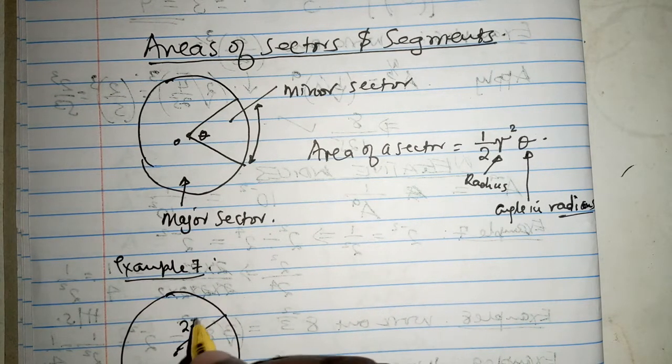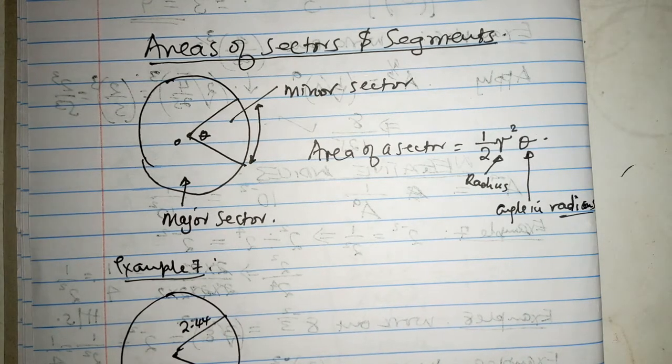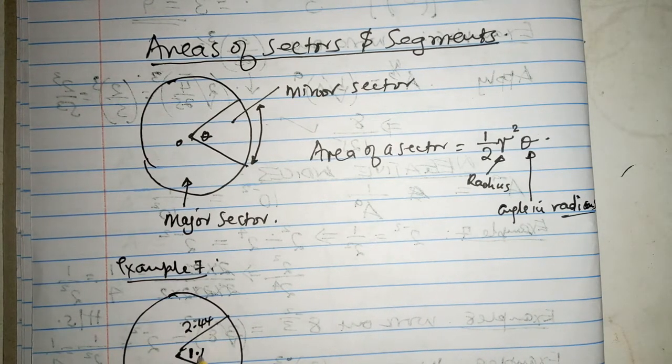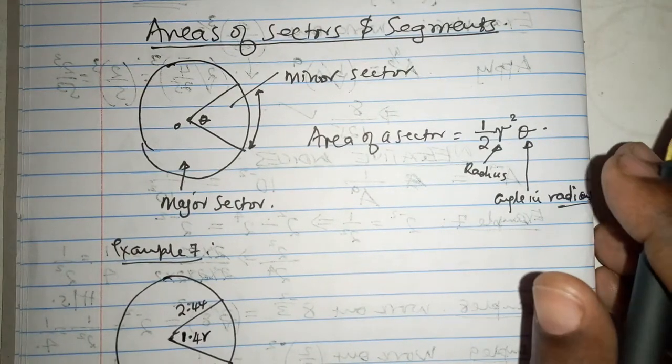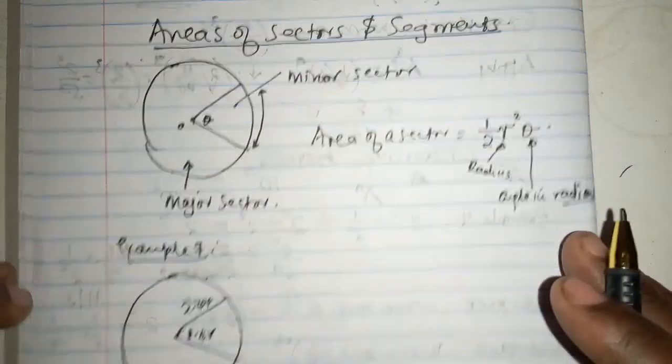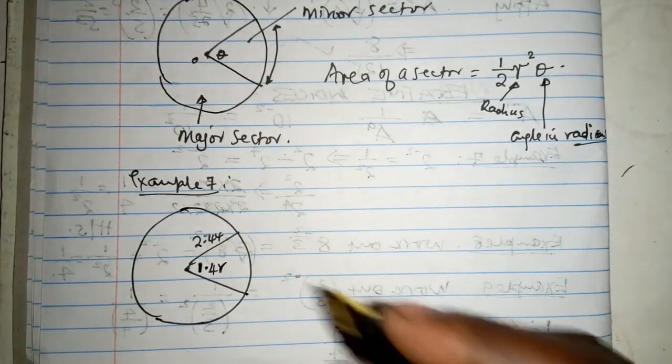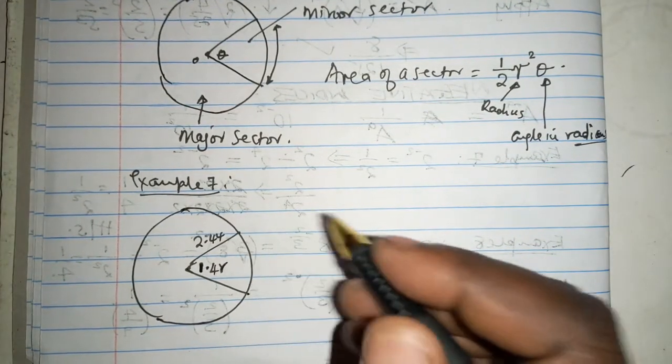2.44, and it's a sector, there is an angle of 1.4 radians at the center. There is an angle of 1.4 radians at the center, and we are supposed to find the area.